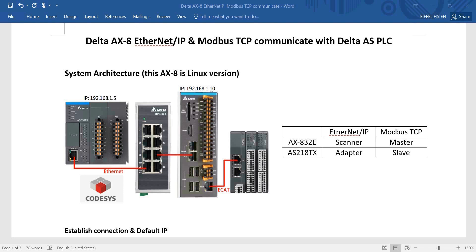You can see the system architecture here. AXA works as Ethernet IP scanner and TCP master, and AX218 works as Ethernet IP adapter and TCP slave. You can see we also add the EtherCAT remote I/O.